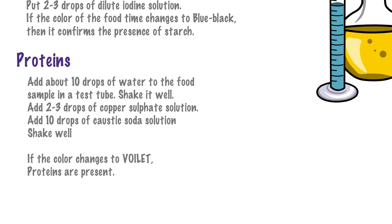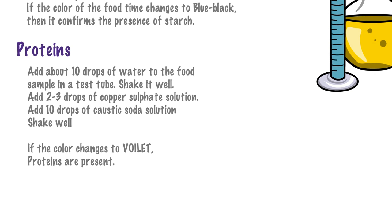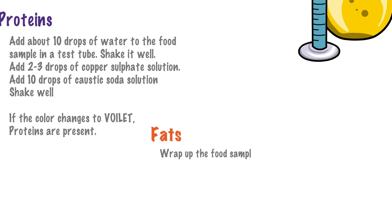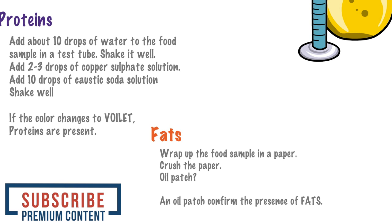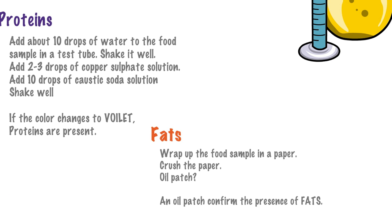Now finally, let's understand how we can test the presence of fats in a food item. Take any food item you like. Wrap it up in a piece of paper and press it a little hard, making sure that the paper doesn't tear apart. Now what do you see on the paper? If there is an oily patch on the paper, it means fat is present in the food item. However, at times, water is also present in the food item, which may look like fat on the paper. To make sure you are not mistaken, allow the paper some time to dry out. Whatever water content is there will eventually evaporate. If you still have that oily patch on the paper, then you know for sure that the food item contains fat. So these were simple tests to confirm the presence of various nutrients in food items.